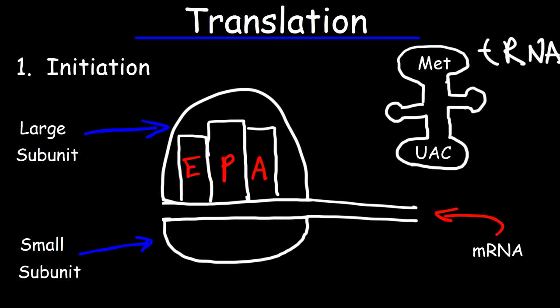Translation, like transcription, occurs in three steps: initiation, elongation, and termination. Here we have a ribosome, which is composed of two subunits, the small subunit and the large subunit. The ribosome has three active sites: the E site, the P site, and the A site. During initiation, we have the start codon AUG, which corresponds to the anticodon UAC. That particular tRNA molecule has the methionine amino acid attached to it. This tRNA molecule enters the ribosome at the P site, also known as the peptidyl site, where the peptide bonds are formed.